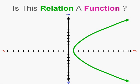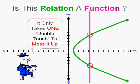Now, this relation, if we use the vertical line test, hits it in two places at that spot. And it only takes one double touch to mess it up. Now, there are many other double touches here, aren't there? But it only takes one to mess it up. So, while this may be a picture of a relation, it is not a picture of a function.